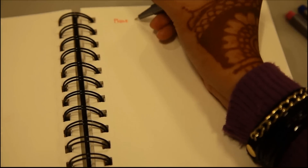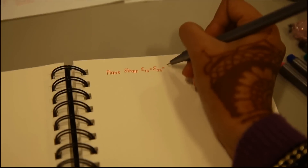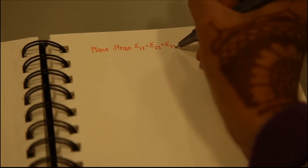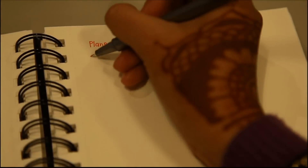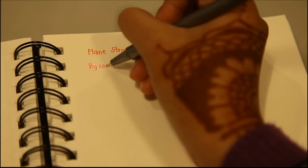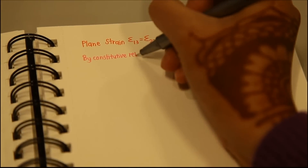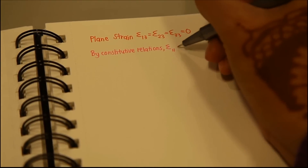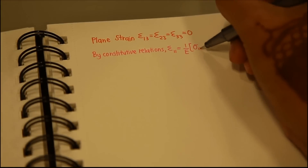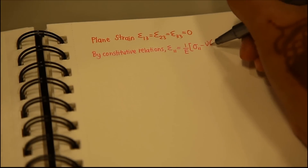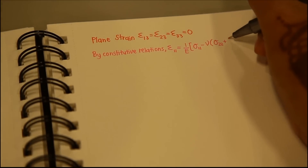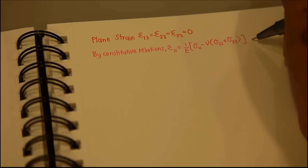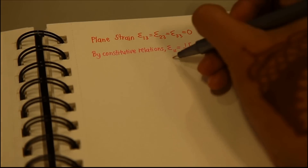We start by stating plane strain conditions: epsilon 1,3, epsilon 2,3, and epsilon 3,3 are equal to zero. By constitutive relations, epsilon 1,1 equals (1/E)(sigma 1,1 minus mu(sigma 2,2 plus sigma 3,3)) — equation 1. Epsilon 2,2 equals (1/E)(sigma 2,2 minus mu(sigma 1,1 plus sigma 3,3)) — equation 2.